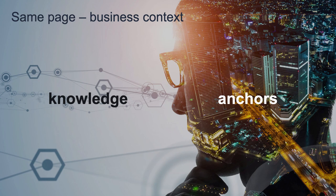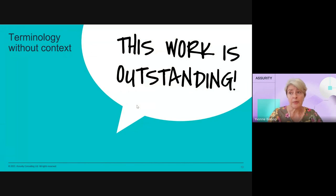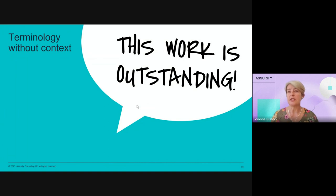Now I'm going to talk about knowledge anchors — the next level down. Knowledge anchors start with terminology without context. Almost every time we see documents put out to market, the document will have a glossary of terms. If you take that glossary a step further and talk about it as the terms in use for your business in the context of the solution you're looking for — that's a different layer of detail. We often see terms used in market engagement documents that are business terms with a description, which is great. But a very small shift can create far greater value.